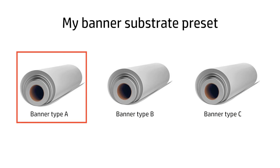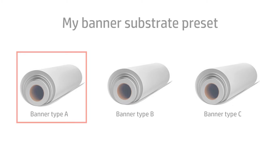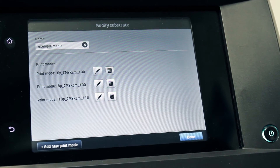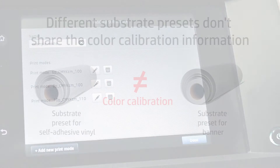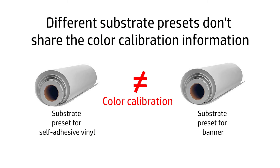HP recommends always using the best possible media preset for each different media. If you use the same media preset for different physical medias, always use the same physical media to run the colour calibration, because the white colour of the media is part of the colour reference. The colour calibration is valid for all different print modes of the calibrated media preset. Each substrate preset must be calibrated independently — one substrate preset being colour calibrated does not mean that the rest of the substrate presets are also calibrated.